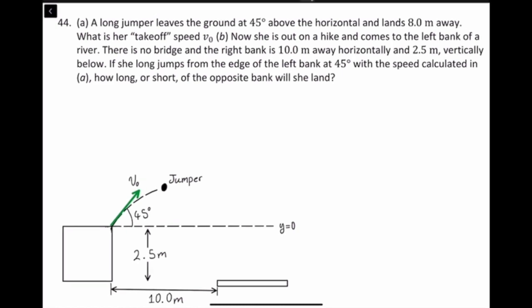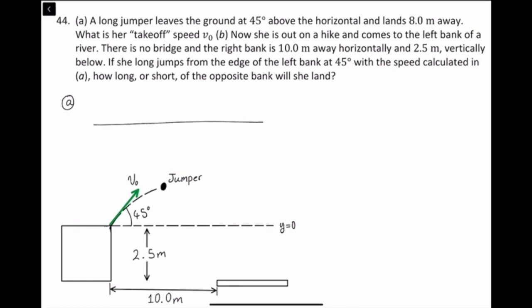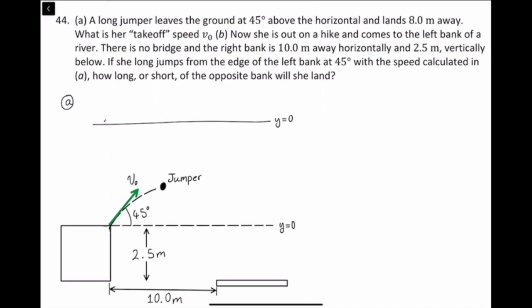For section A, for a long jumper, the ground is y equals 0. She'll jump and land, so her initial height is y equals 0. Initial height is equal to final height, which is equal to 0. Because our initial and final height are both equal to 0, we can use the range formula.